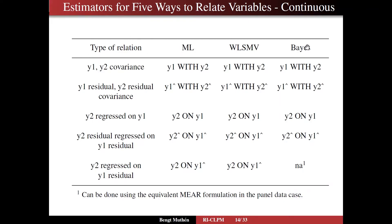So we have three different estimators and just want to list what's available in which estimator. And for all three estimators, we can certainly say y1 with y2 here for continuous variables. And we can say y1 hat with y2 hat for all three estimators. And we can say y2 regressed on y1, of course, and y2 hat on y1 hat for all three.